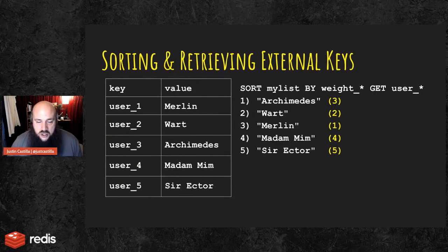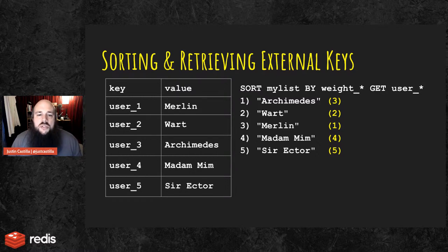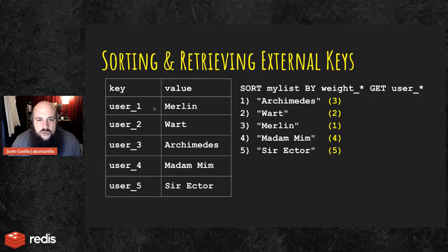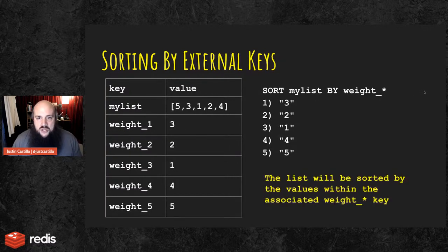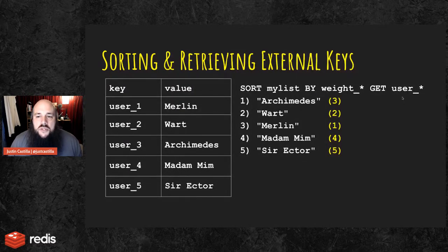Going deeper: calling SORT my_list BY weight and adding GET on another group of keys — like user_one with value Merlin, user_two with war, user_three with Archimedes, user_four with Madam Mim, user_five with Sir Ector — these are all Sword in the Stone characters. The GET user_* option looks up users associated with the sorted numbers, returning Archimedes, war, Merlin, Madam Mim, and Sir Ector.